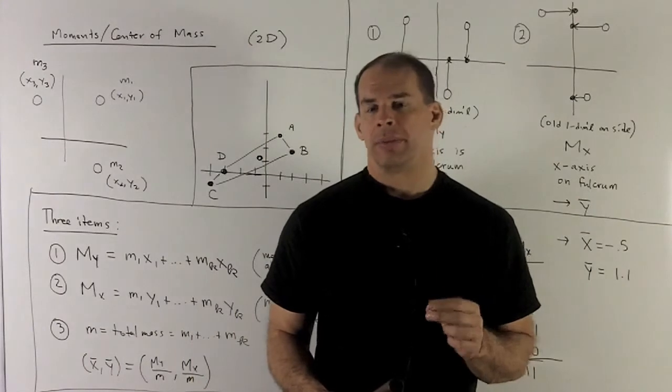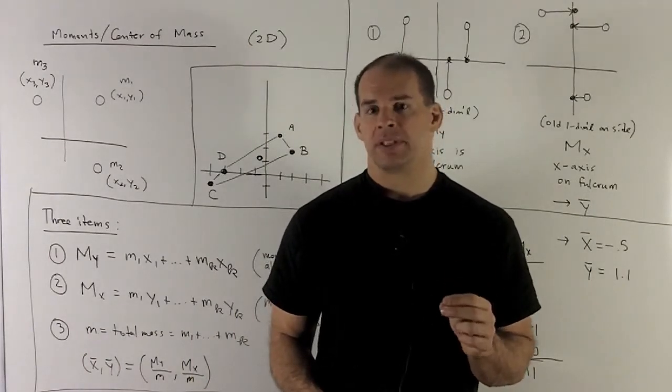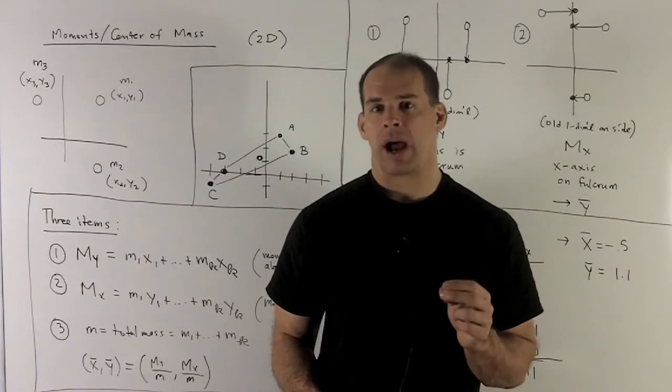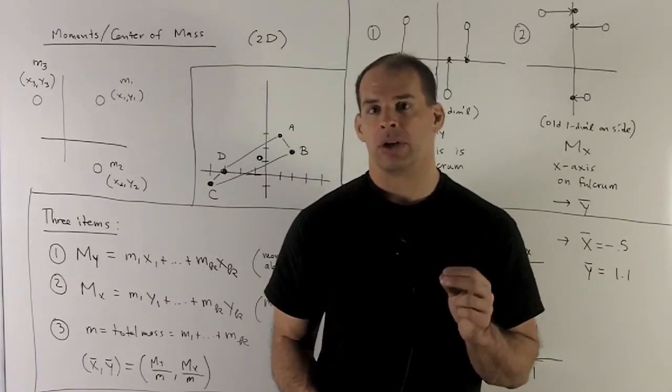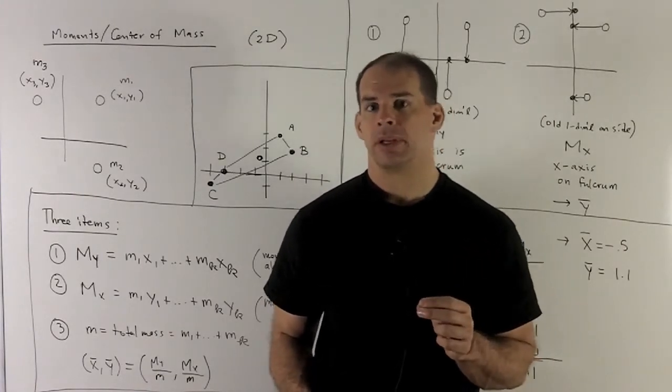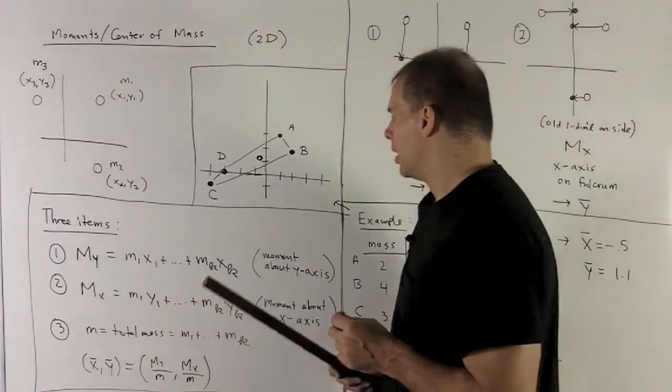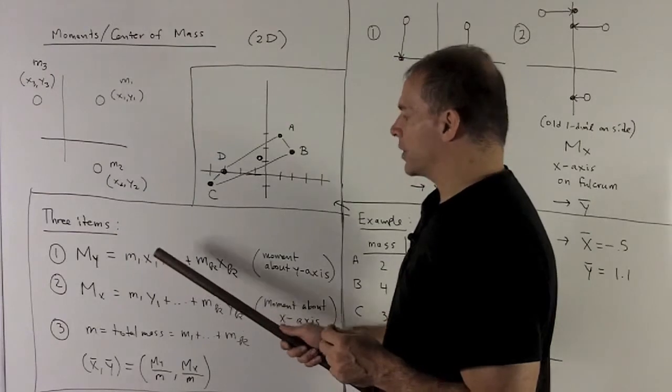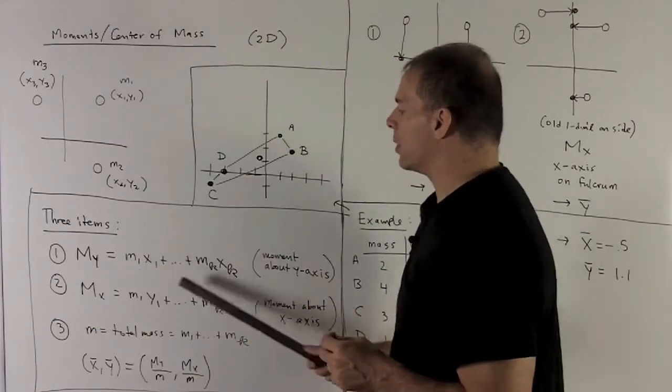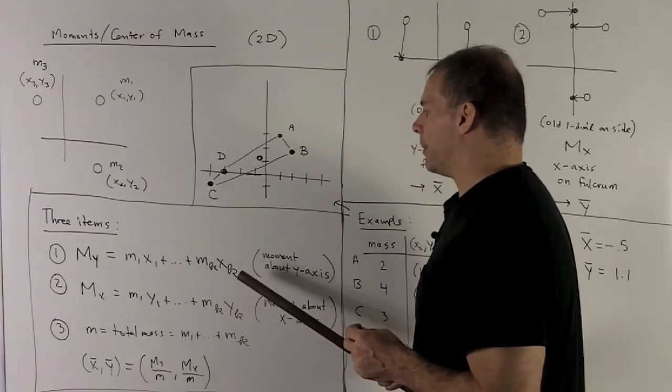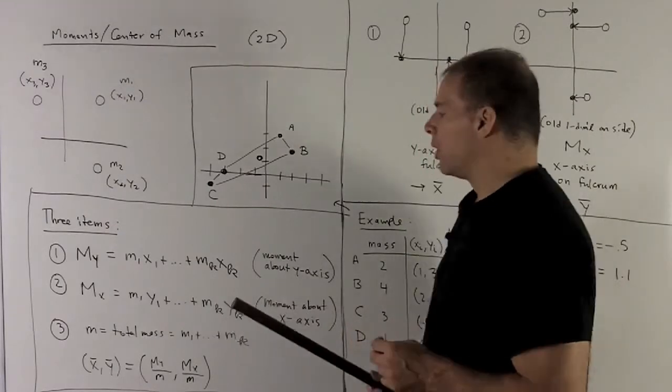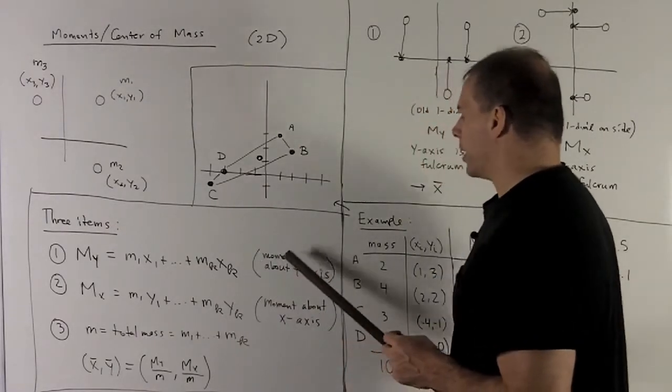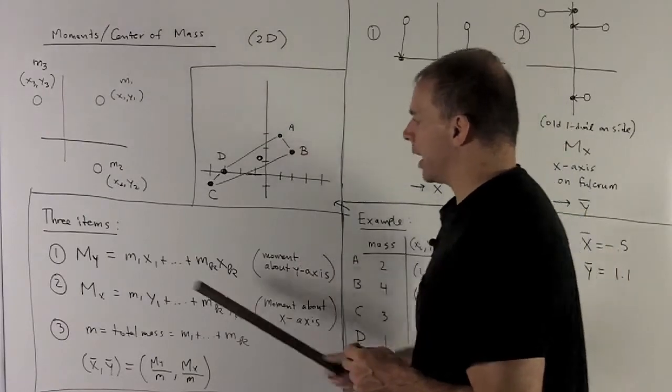So before we needed two items to get to our answer in one dimension, so for the 2D problem we'll need three items. But they're all going to look pretty familiar. So let's take a look. My first item, notice we have m1·x1 and then we take the sum of all those. Well that's just our moment about the origin from before. Only now we're not going to call it the moment about the origin. We're going to call it the moment about the y-axis, My.